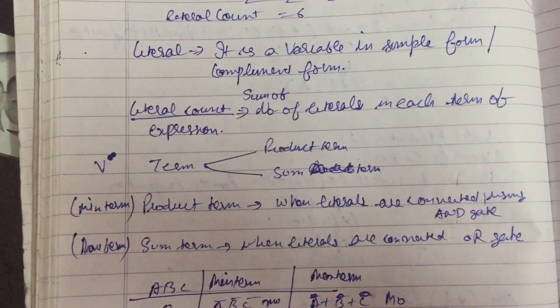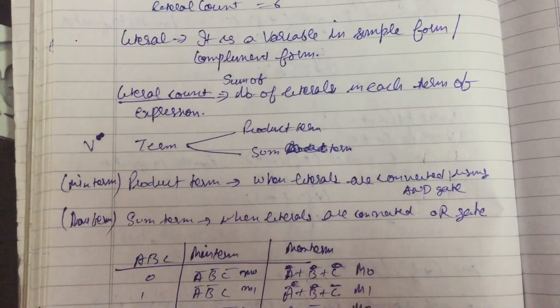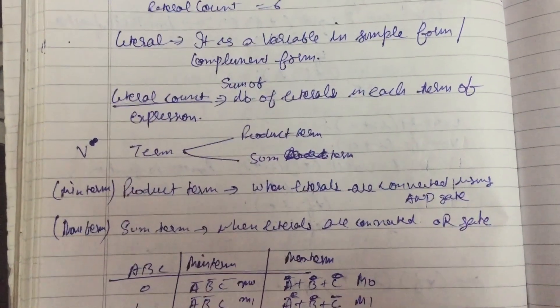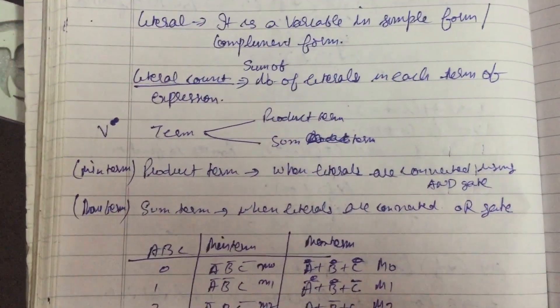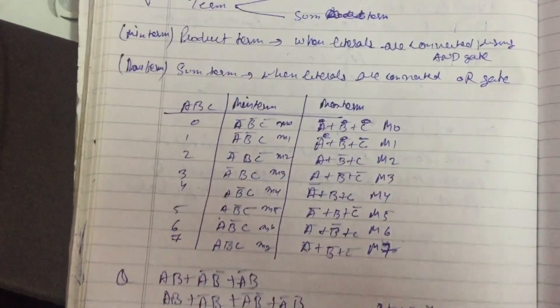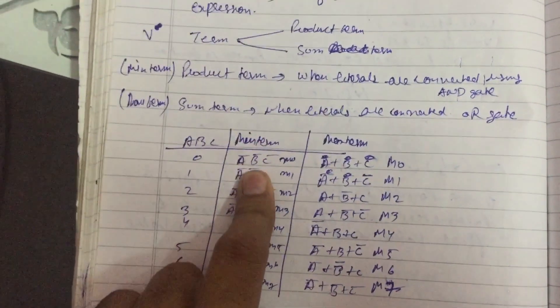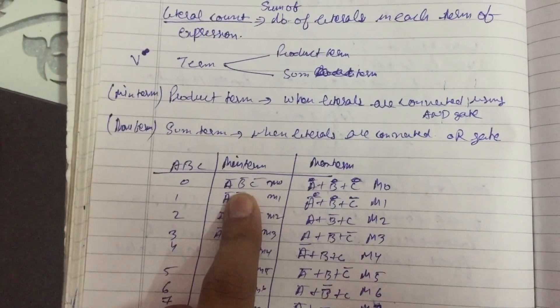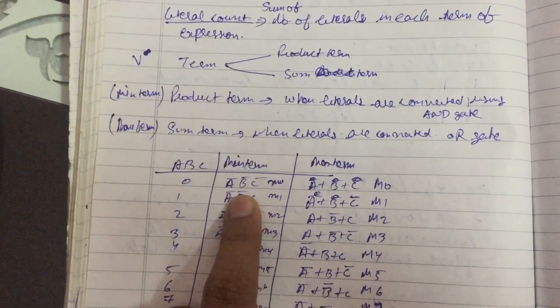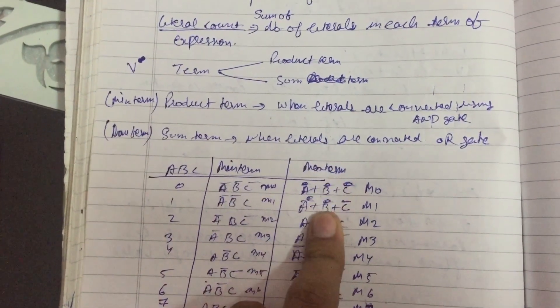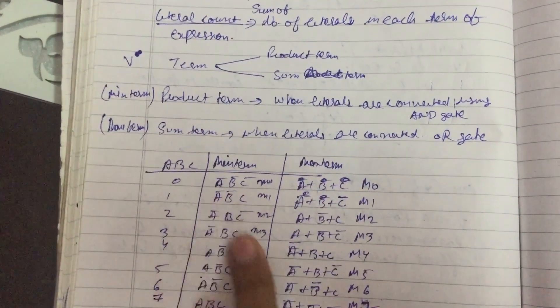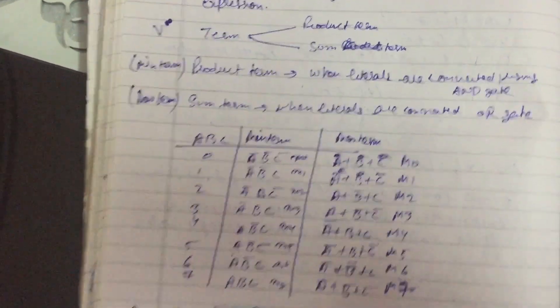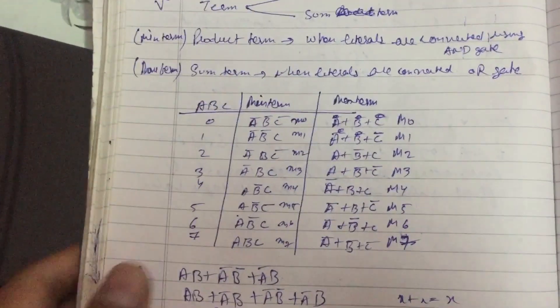When literals are connected using AND gate, that is called min term or product term. On the other hand, when literals are connected with OR gate, it is called sum term and max term. Here is the table you can see: min term with AND gate, max term with OR gate. We can denote it as this.